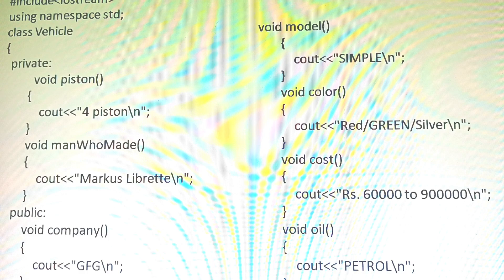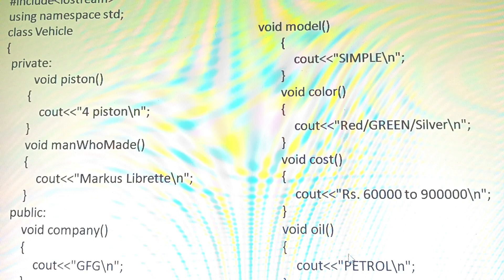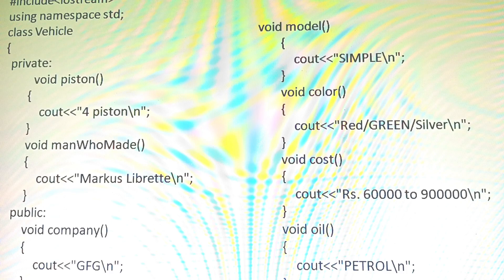Let's do one more program using abstraction. The class name is YGroup. Here two functions are private: Piston and ManWhoMade. Then the public members include: company name, model, color, cost, and oil. In the public void model function, the output displays: color as green/silver/red, cost in rupees, oil as petrol, and company as GFG. The Piston and ManWhoMade functions are private.